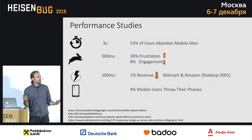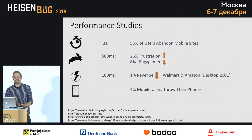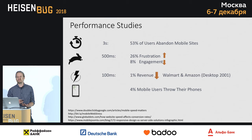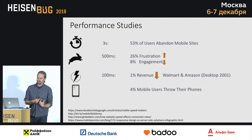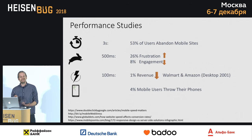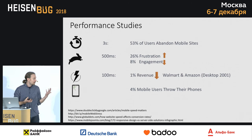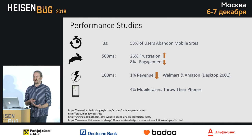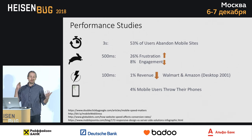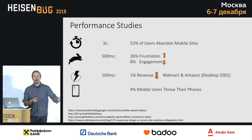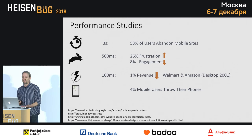Some other performance data points: Google found that a three-second delay on a mobile website causes you to lose 50% of your customers. A half-second delay increases frustration and lowers engagement. Amazon and Walmart independently, about 20 years ago, found that every 100 milliseconds causes them to lose 1% of revenue. And my favorite stat: 4% of mobile users admit to throwing their phones. So we all understand that slow is a problem.